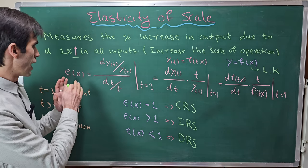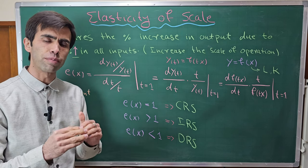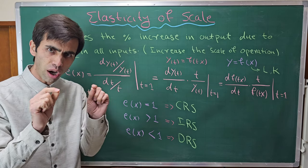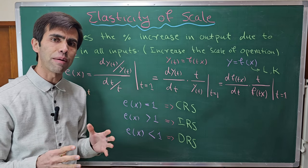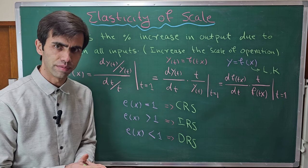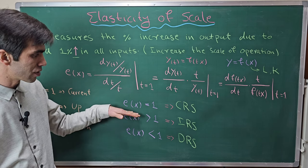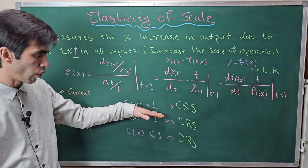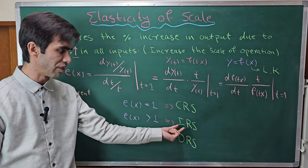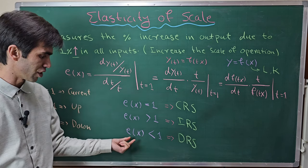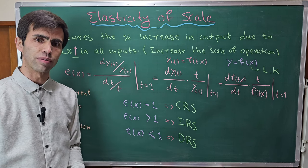Overall, the elasticity of scale measures what happens to the output level when we increase the scale of operation by a very small amount, like one percent. If the result equals 1: constant returns to scale. If greater than 1: increasing returns to scale. If less than 1: decreasing returns to scale.